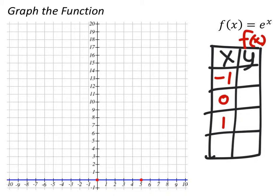And you'll probably have to use a calculator in order to solve for these values, but right here where x is negative 1, we would put e to the power of negative 1 and solve for that. And that would be 0.3679, I'm going to round that.